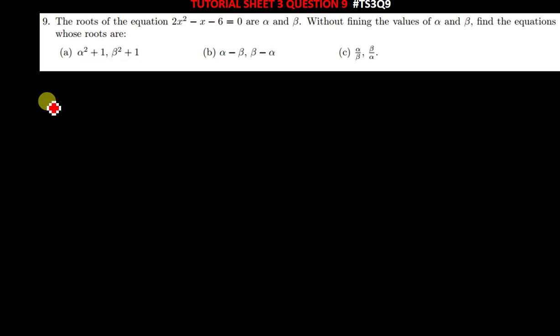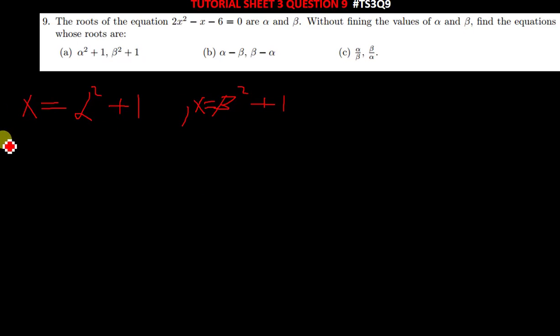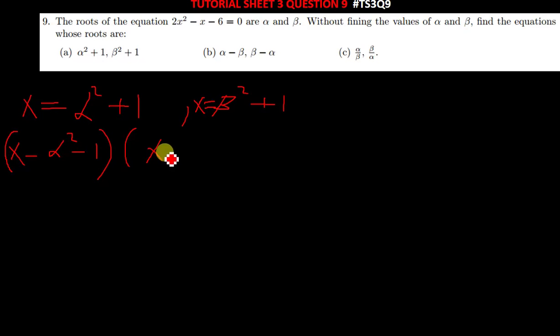What you need to do is first identify your roots. The roots given are x = α² + 1 and x = β² + 1. So you are going to solve the quadratic equation in the backward way, giving you (x − (α² + 1))(x − (β² + 1)) = 0.